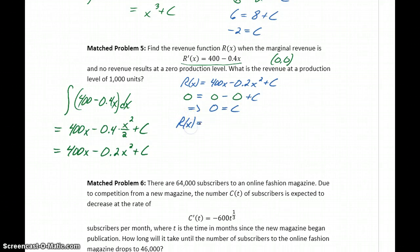So our revenue function is going to be equal to 400x minus 0.2 x squared.